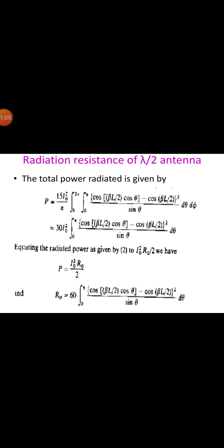The terminal impedance also includes some inductive reactance. Including that reactance, the impedance is Z = 73 + j42.5 ohms. To make the reactance zero, that is to make the antenna resonant, it is required that the antenna be shortened by a few percent less than lambda/2. This shortening also results in a reduction of the radiation resistance to about 65 ohms.